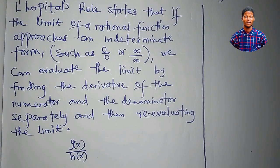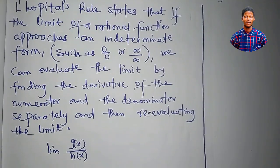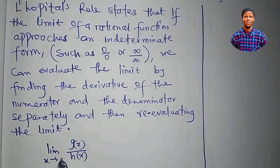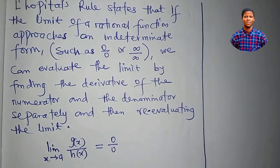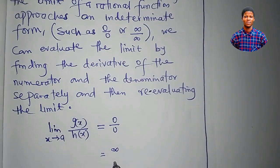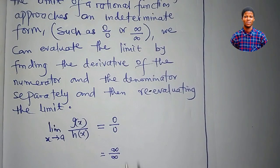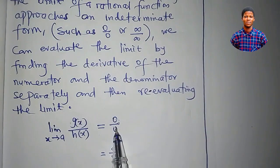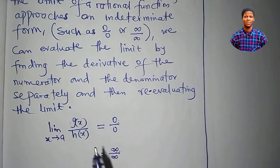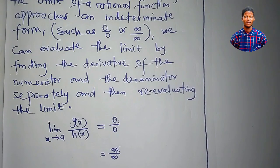The rule says that if I take the limit of this function as x approaches a, and what I'm getting is either 0 over 0 or infinity over infinity — these are indeterminate forms — then when evaluating the limit and the numerator equals 0 and the denominator also equals 0, or the numerator equals infinity and the denominator also equals infinity, L'Hôpital's rule is applied.